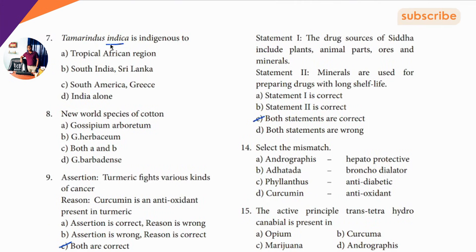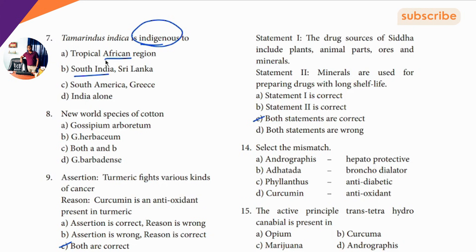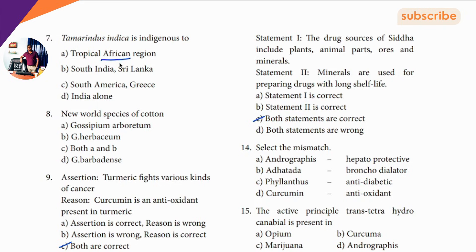Seventh question: Tamarindus indica — tamarind tree. South India — there is also the Malabar region. India, palm. Place of birth of Tamarindus indica is Africa.